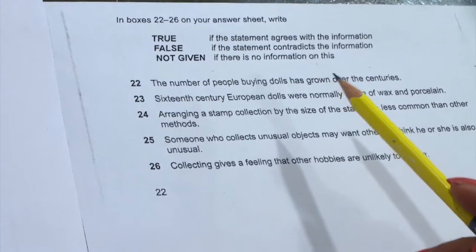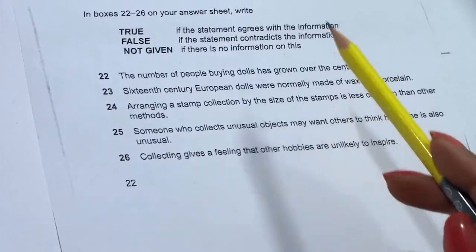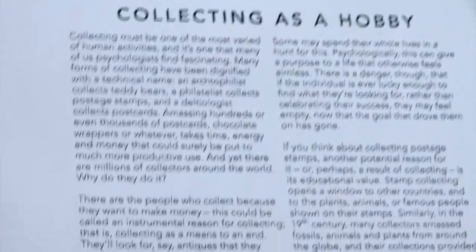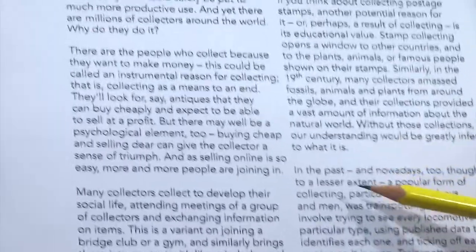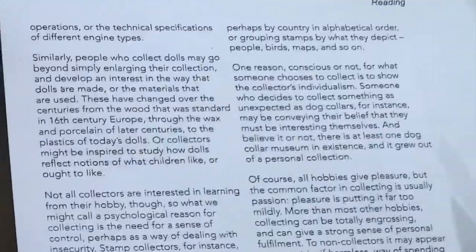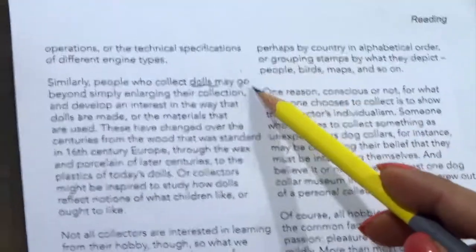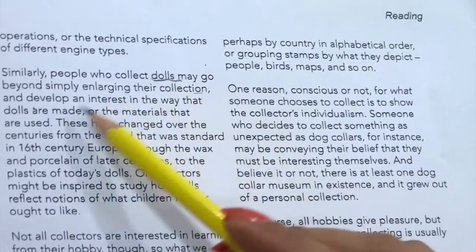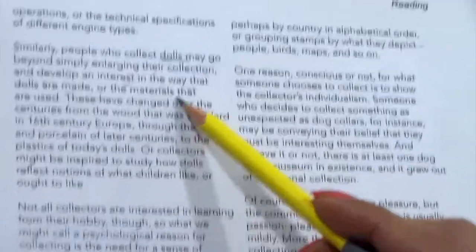First we will look at question 22: 'The number of people buying dolls has grown over the centuries.' We will scan the passage — they are talking about teddy bear stamps in one section. Moving to the next passage, they are not talking about dolls anywhere. Then on the first paragraph of the next page, they are talking about dolls. The passage reads: 'People who collect dolls may go beyond simply enlarging their collection and develop an interest in the way that dolls are made or the materials that are used.'